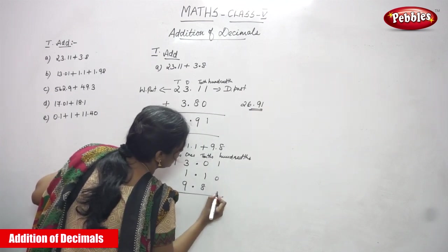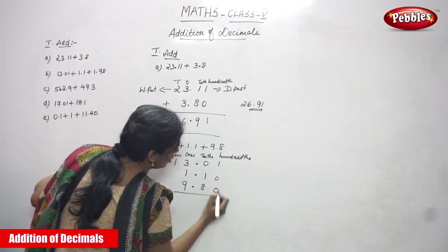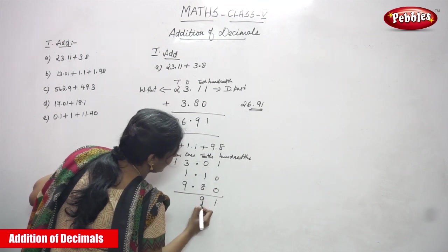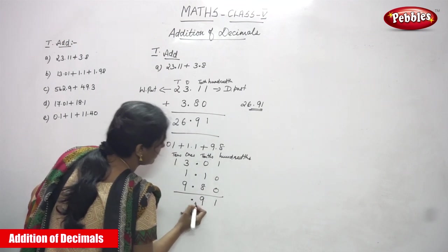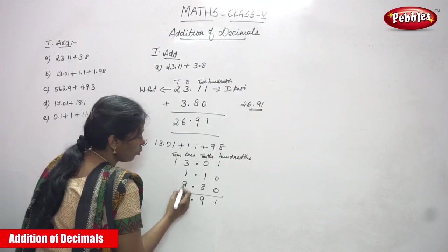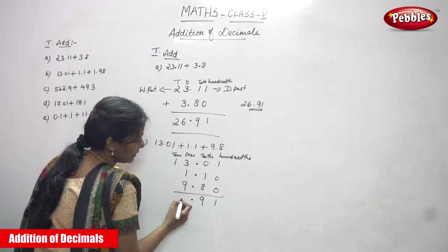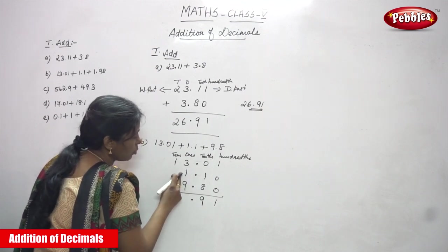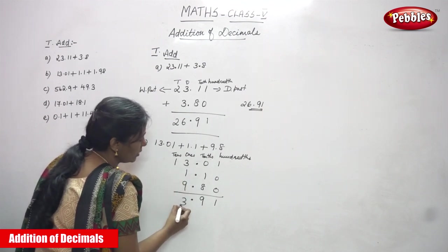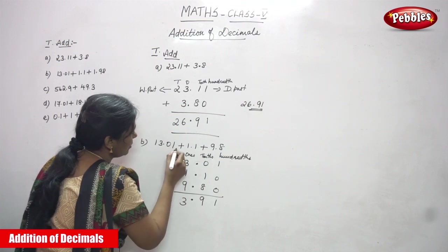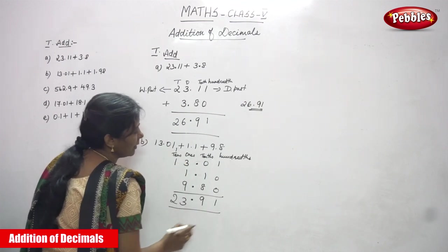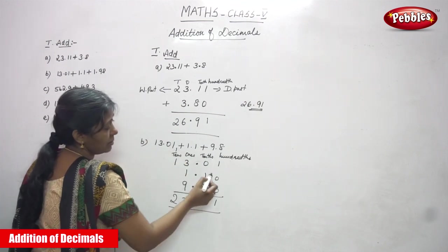So here 0, here 0. Then 1. 8 plus 1 is 9. Then 3 plus 1 is 4. 4 plus 9 is 13. Write 3, carry 1. 1 plus 1 is 2. I will repeat once again.